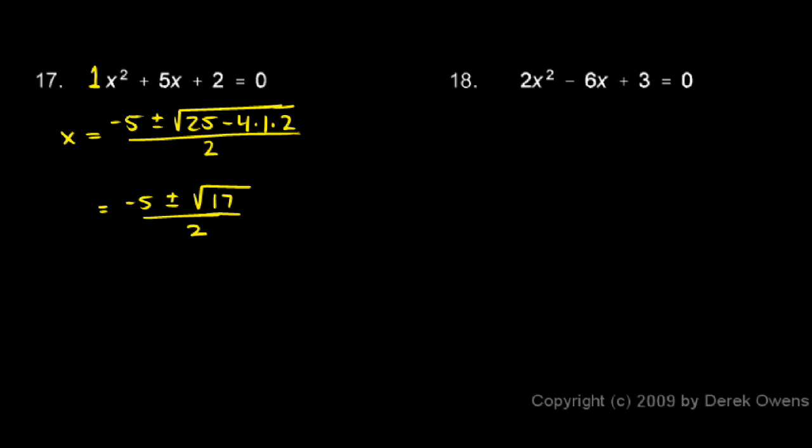And that's it. We're done. There are two answers there. Negative 5 plus the square root of 17 over 2 and negative 5 minus the square root of 17 over 2.